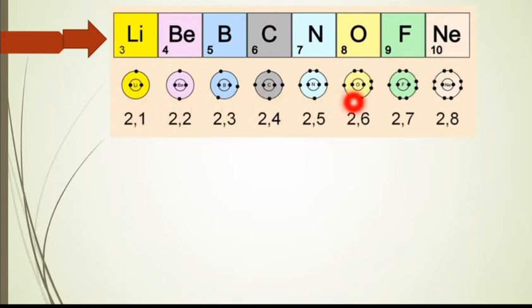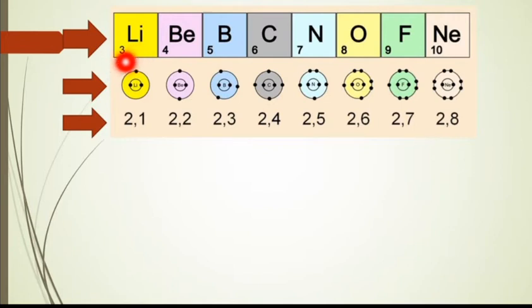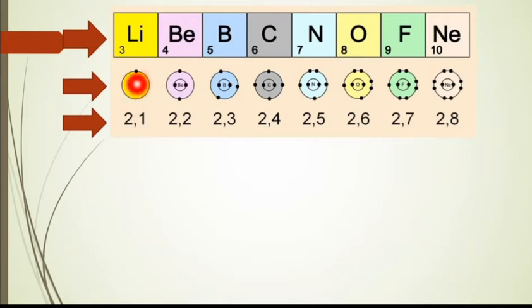यहाँ पे second row में यह जो आपको नज़र आ रहे हैं, यह इनके atomic structures हैं। इसमें इनके electrons की arrangement बताई है। For example, lithium का atomic number 3, तो जो atomic number होता है element का, उसमें उतने ही electrons भी present होते हैं। So lithium में 3 electrons present हैं। अब यह electrons arrange कैसे होते हैं - किसी भी atom का first shell है, उसमें 2 electrons आते हैं। तो 3 में से 2 electrons first shell में, और जो third electron है वो second shell में आ जाएगा - इसके first shell में 2 electrons हैं और second में 1।